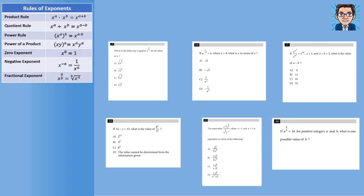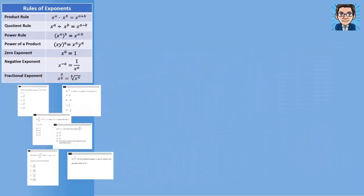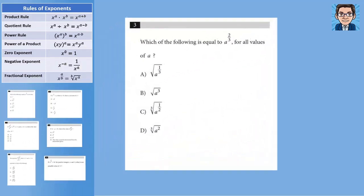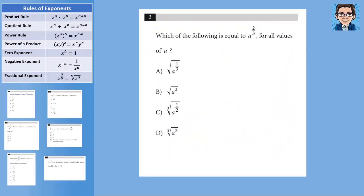Let's take a look at six practice SAT problems. The first problem: which of the following is equal to a to the 2 thirds? This is just an application of the fractional exponent rule. The denominator is the root, so it's going to be the cube root. The numerator is the power, either inside or outside. So the answer is choice D.